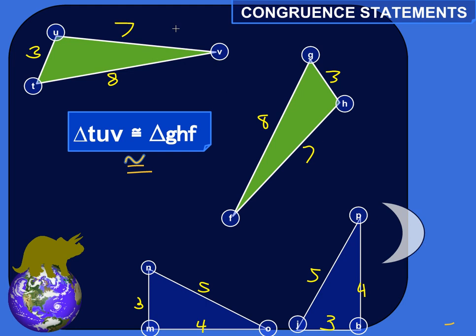And that they're congruent means that the corresponding sides are congruent, they have the same measure, and the corresponding angles are congruent, meaning they have the same measure. And it matters what order you write the letters in when you're talking about a triangle that's defined by three points.